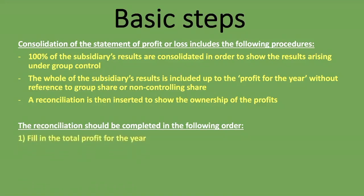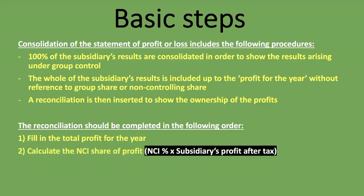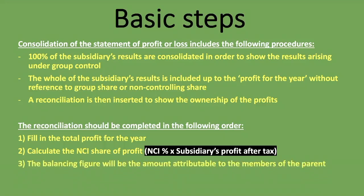First, fill in the total profit for the year. Second, calculate the NCI, or non-controlling interest share of the profit — take the NCI percentage and multiply it by the subsidiary's profit after tax. It's very important to note: a common student mistake is to use the group profit instead of the subsidiary's profit after tax. Finally, the balancing figure will be the amount attributable to the members of the parent company.